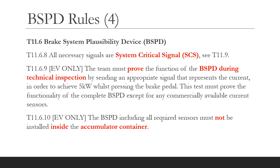The BSPD is a safety critical system, so please read the rules at T11.9 about that and fully understand the implications. For EV teams, they must prove the BSPD during scrutineering or technical inspection. You can do that by an appropriate signal that represents the current in order to simulate 5 kilowatts of power, because the car won't actually be moving — it will be jacked up on stands with the wheels off, so you must simulate it.